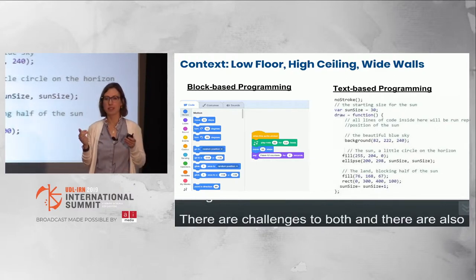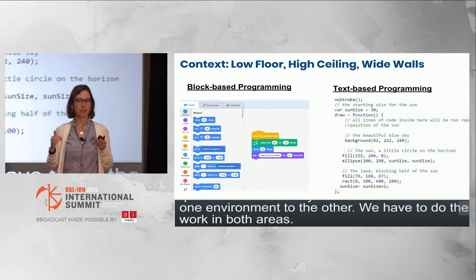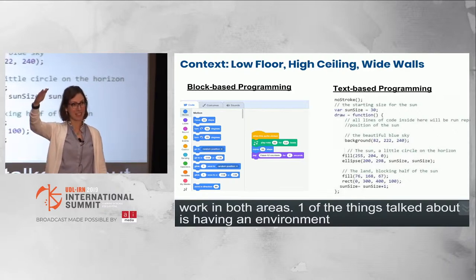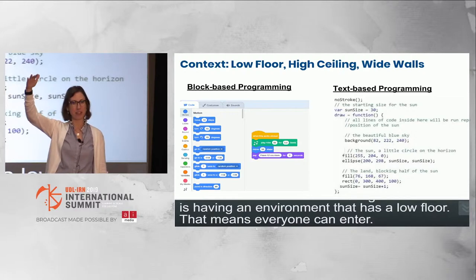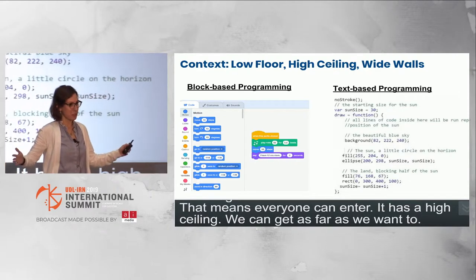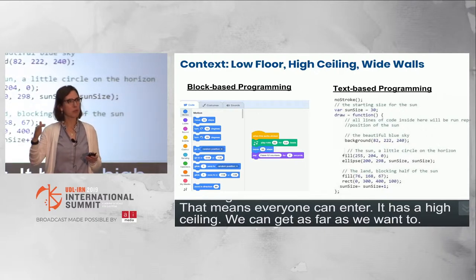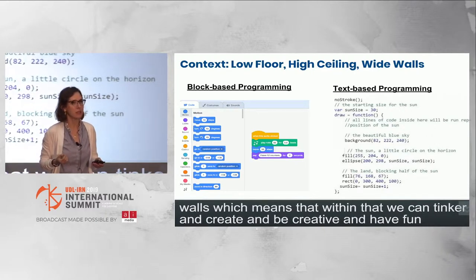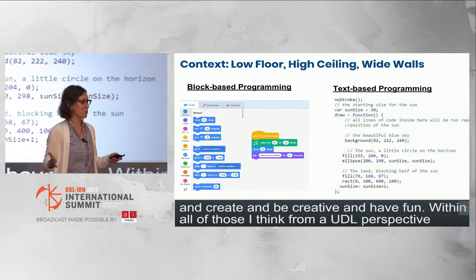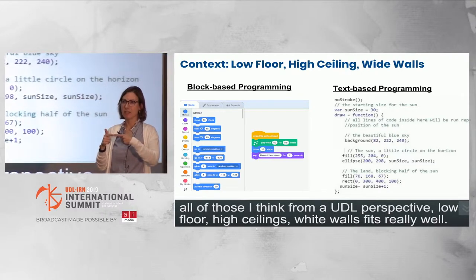We have to do the work in both areas. Seymour Papert used to talk about having an environment with a low floor — meaning everybody can enter — a high ceiling, so you can go as far as your interest and motivation take you, and wide walls, meaning within that space you can tinker, be creative, and have fun. From a UDL perspective, low floor, high ceiling, and wide walls fits really well, and that's where we can make connections between CS education and universal design for learning.